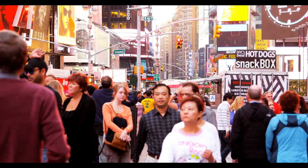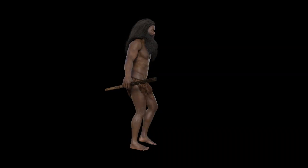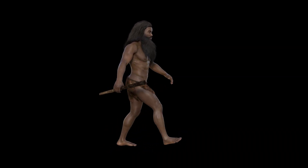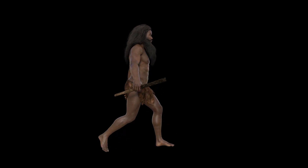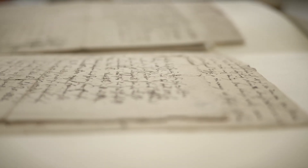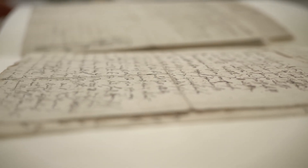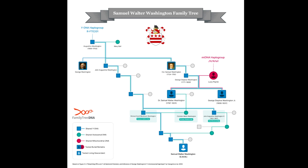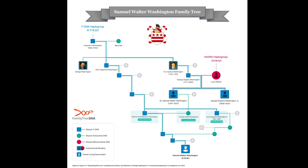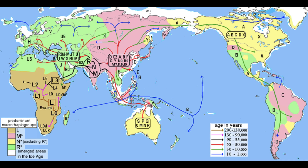At one point or another in your life you have wondered: who are my ancestors, how far can I go back in my family tree, where do I come from? For most of us we know our parents, grandparents, maybe even great-grandparents, and it usually stops there. But something many people don't know is that you can actually trace your direct maternal or paternal lineage back tens or even hundreds of thousands of years through haplogroups.